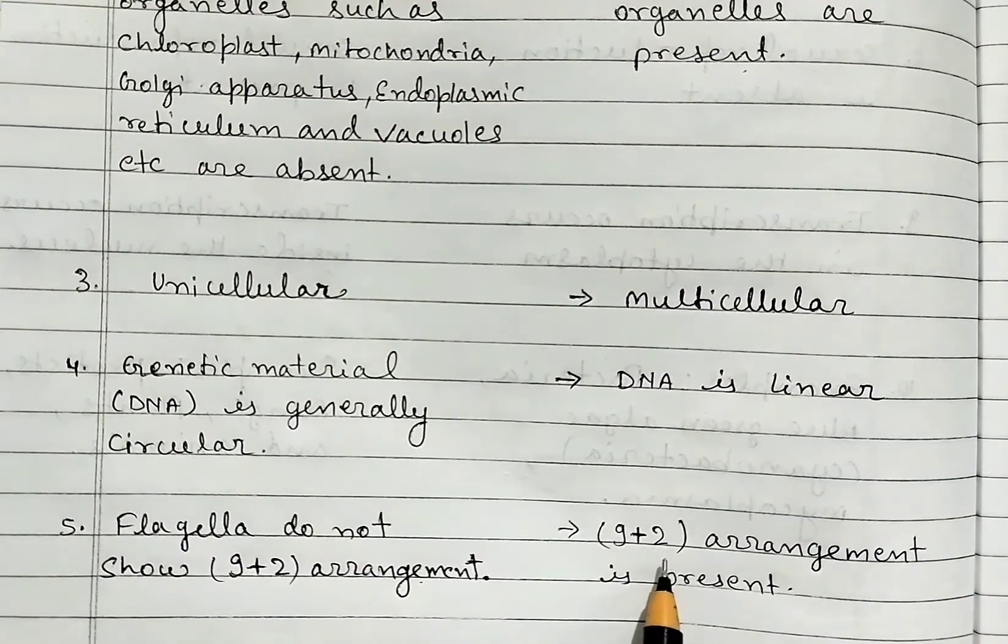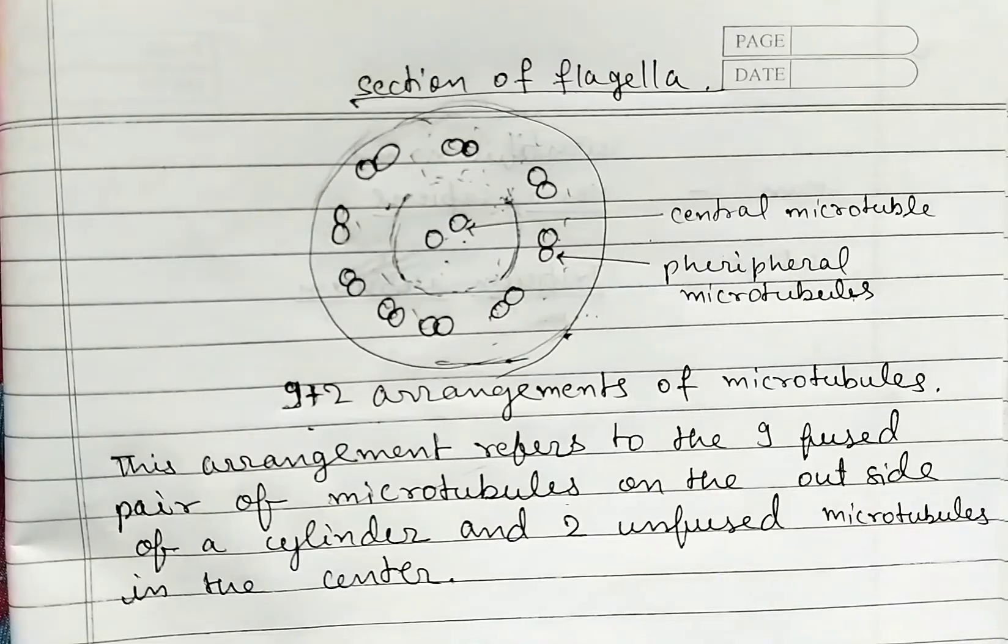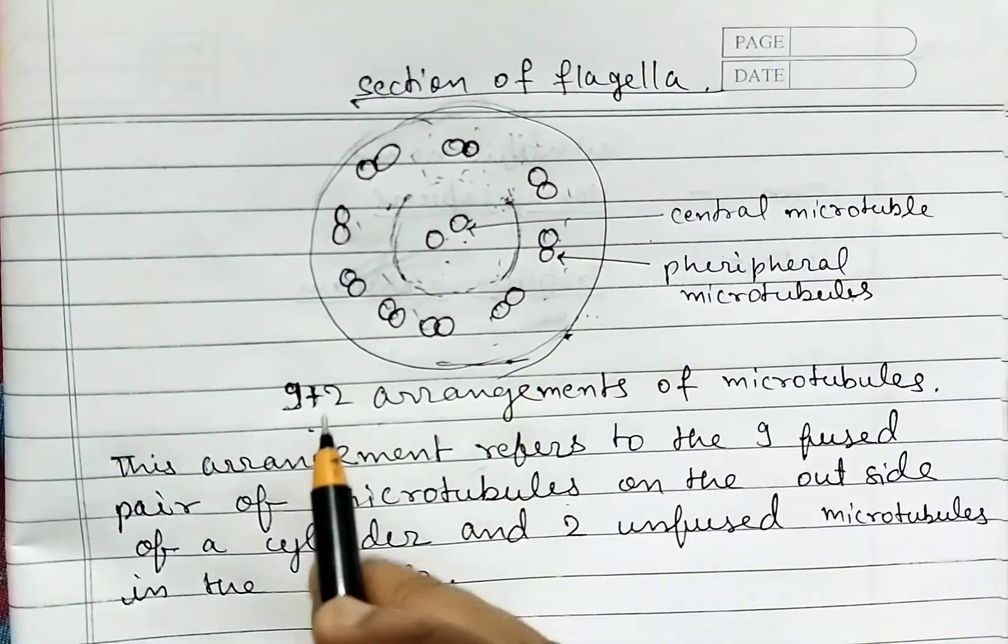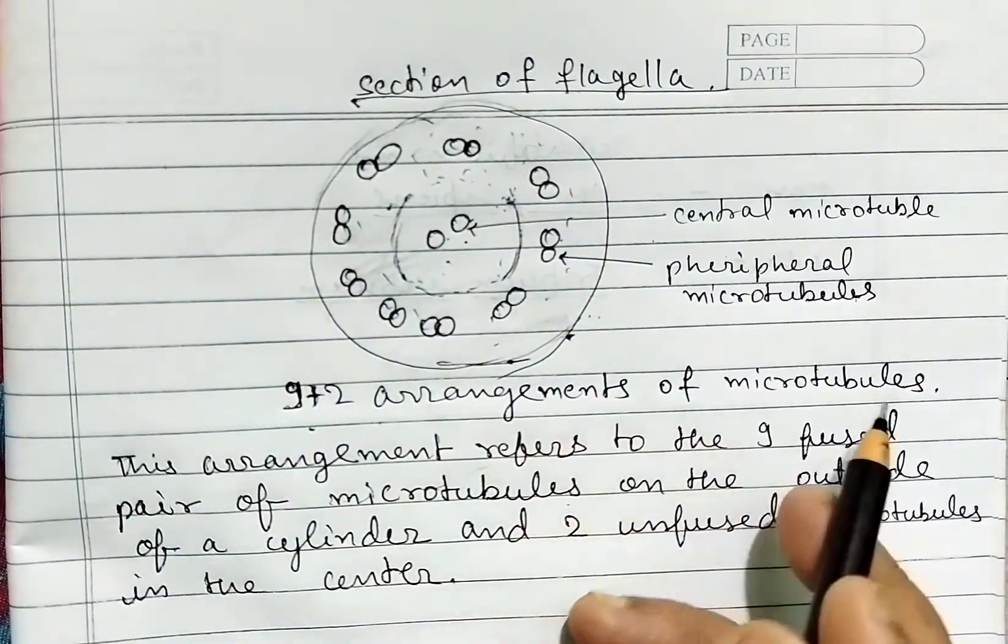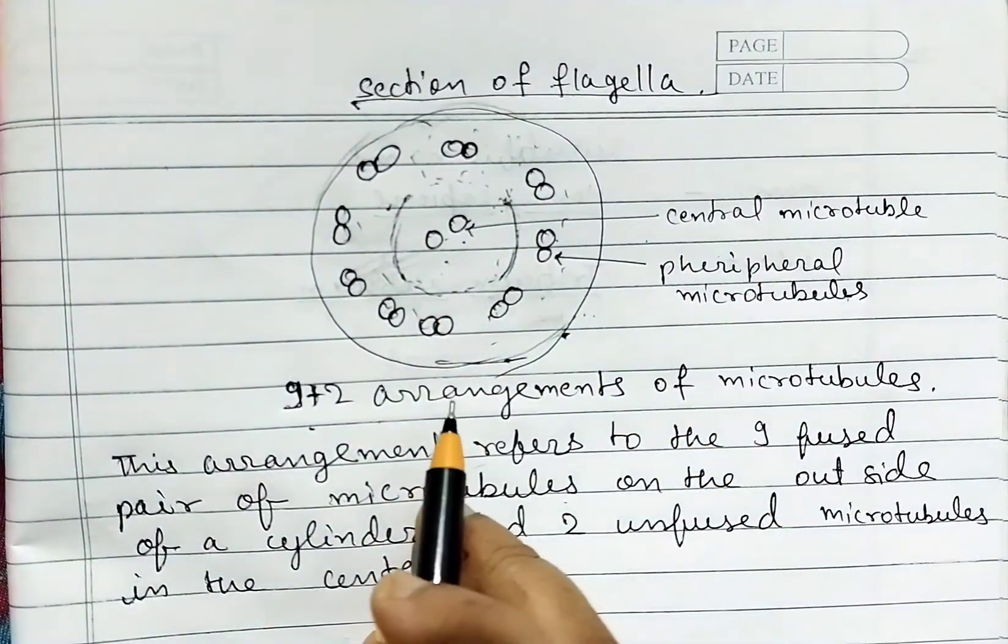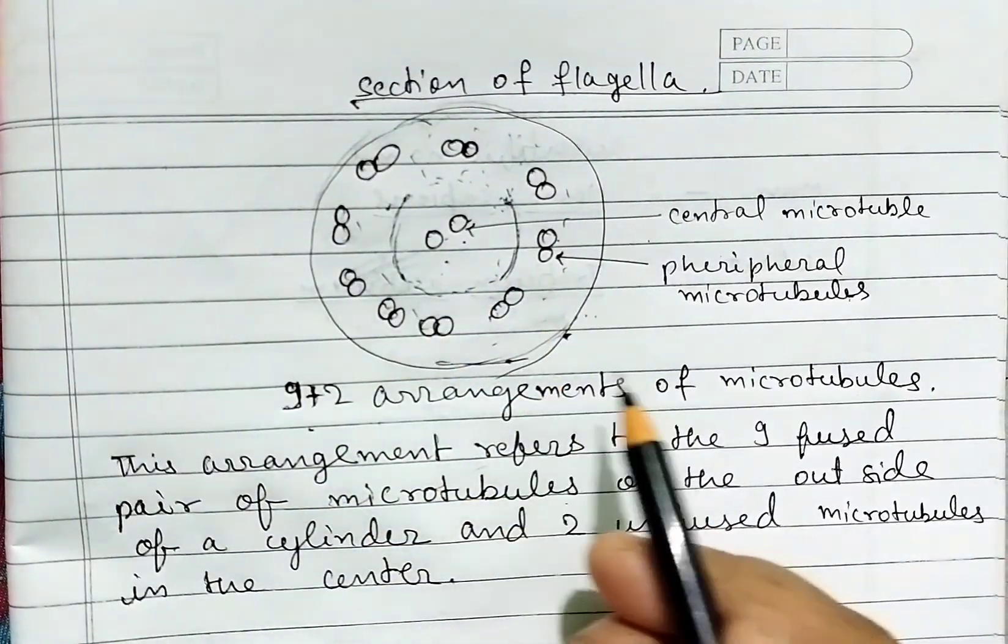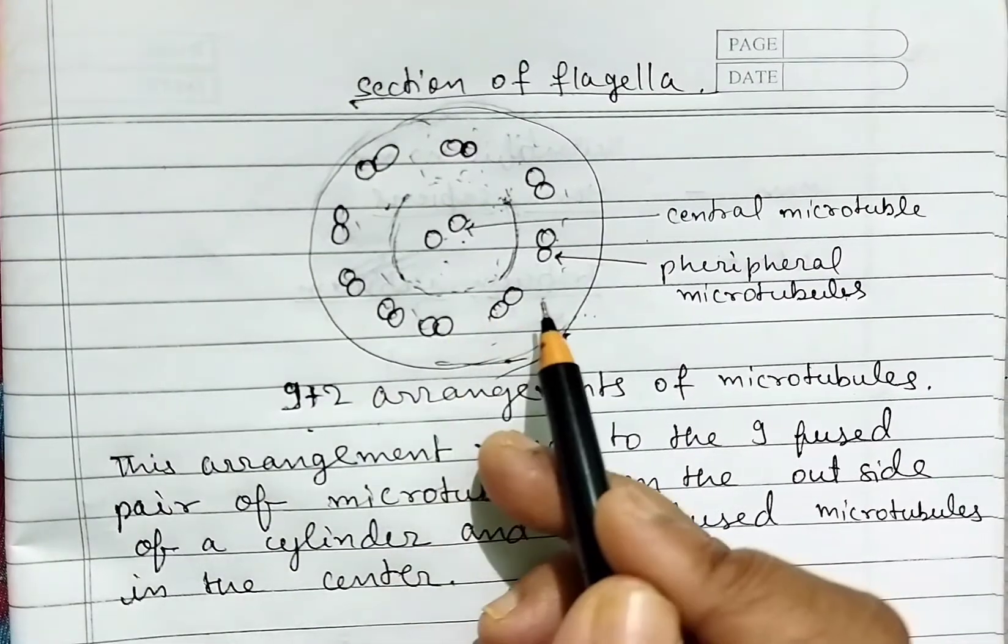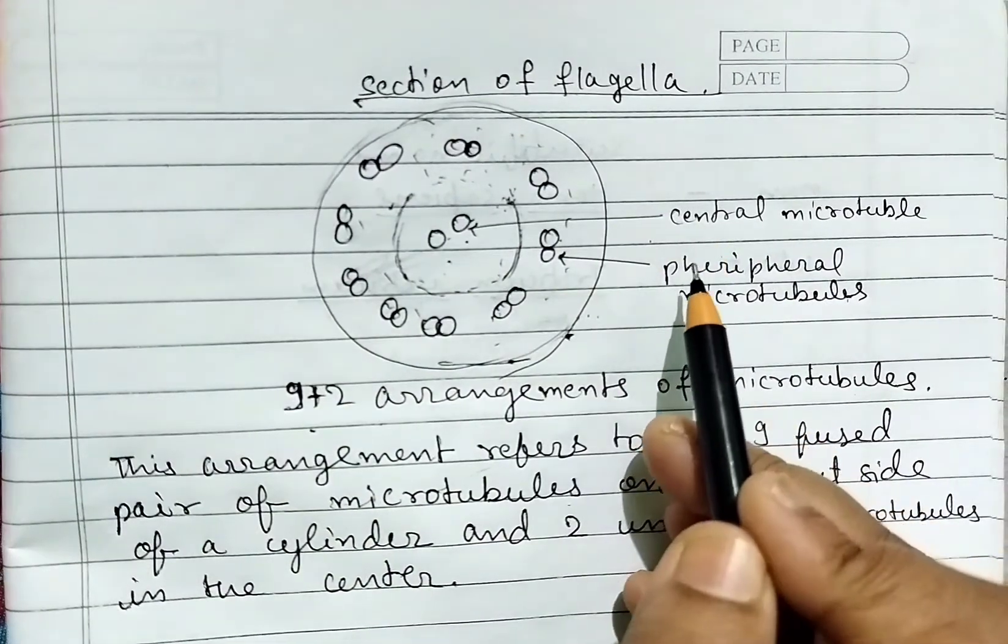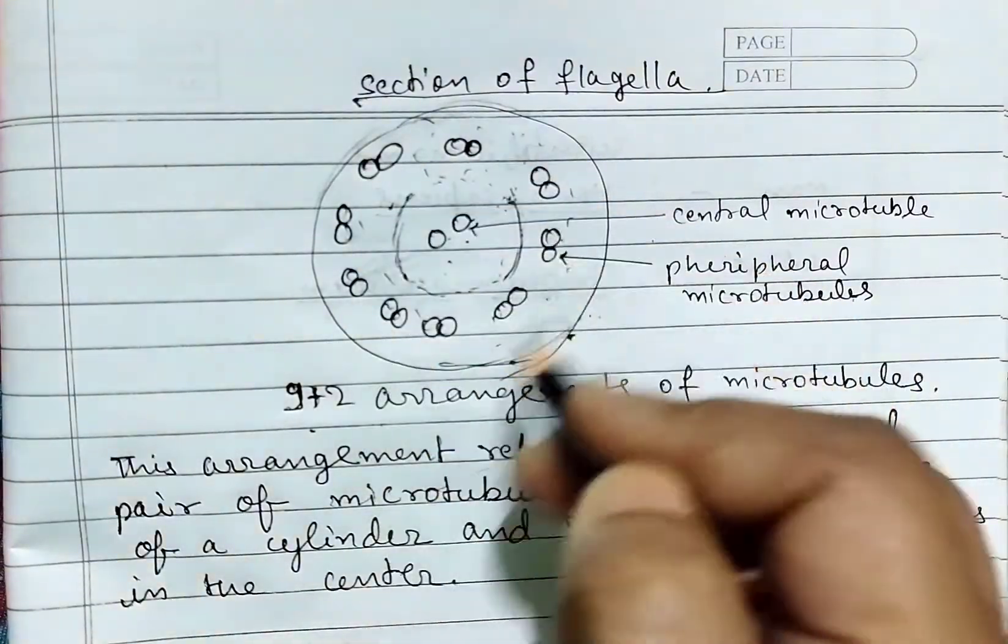This is a section of flagella. This diagram shows the 9+2 arrangement of microtubules. In this arrangement, the 9 fused pairs of microtubules on the outside of a cylinder are present, and two unfused microtubules are present in the center.